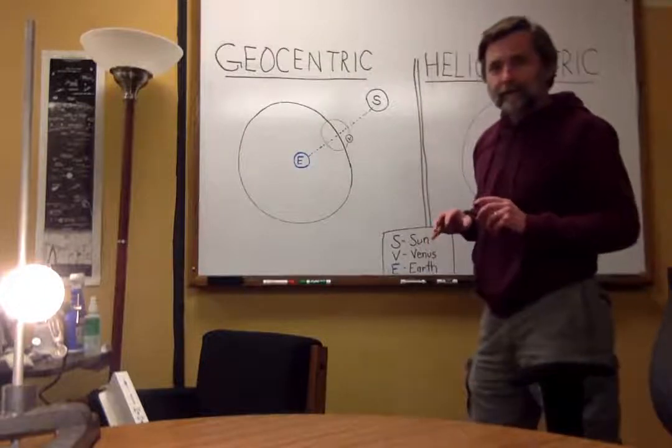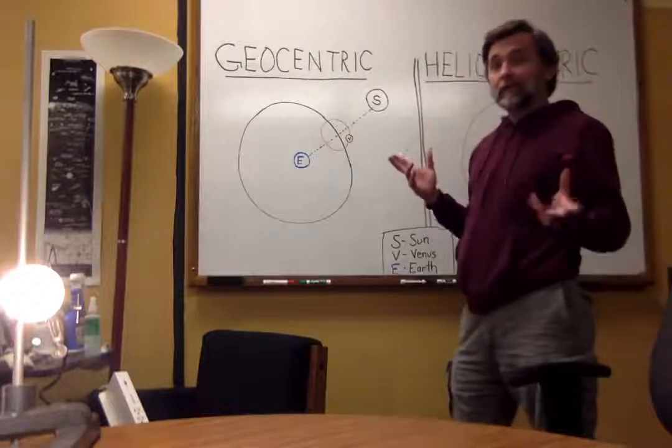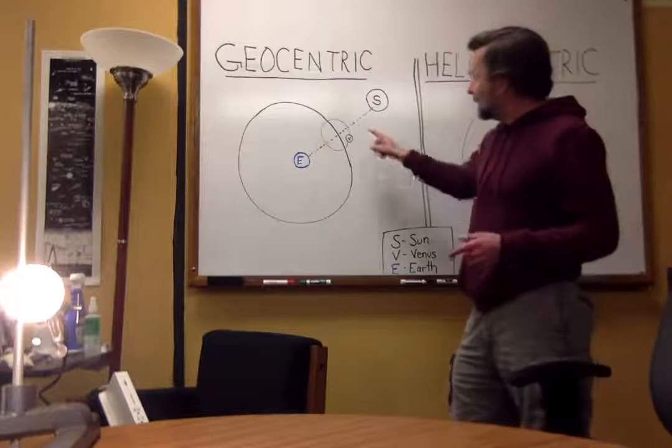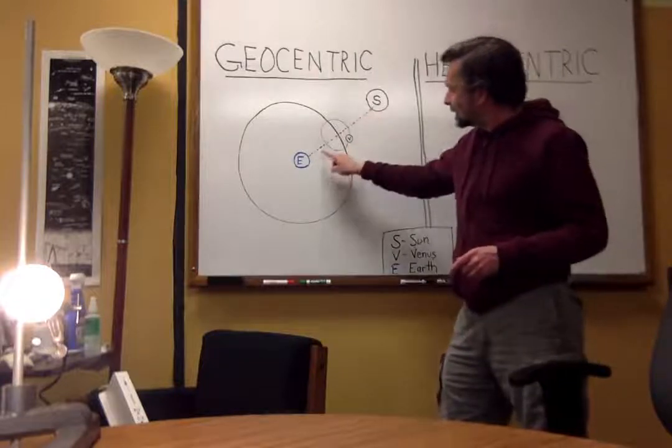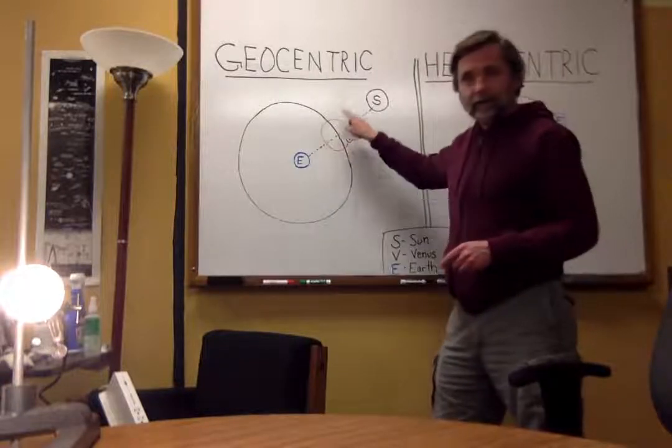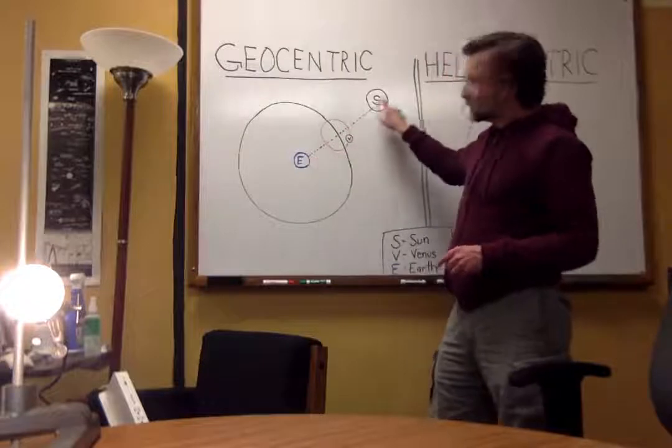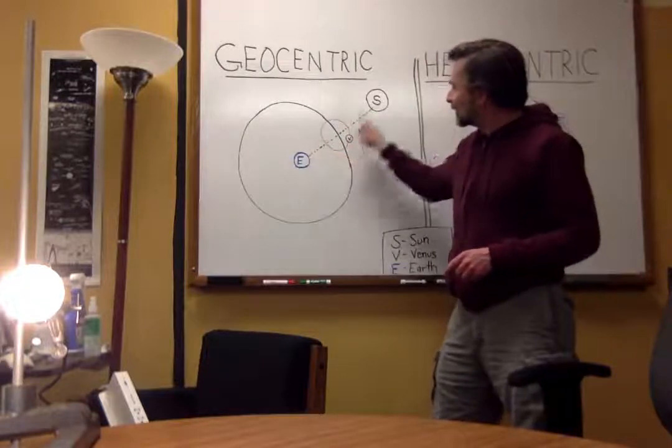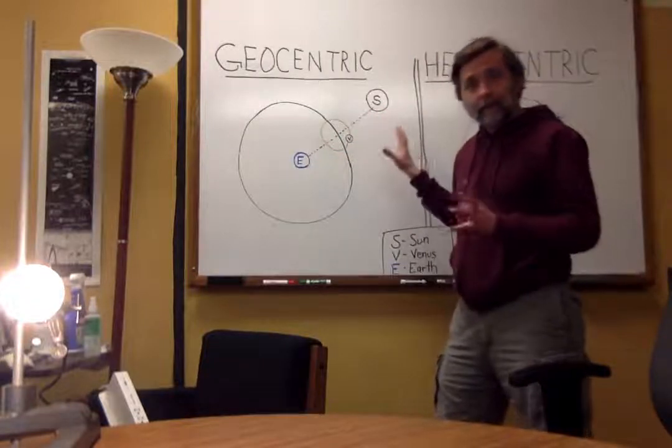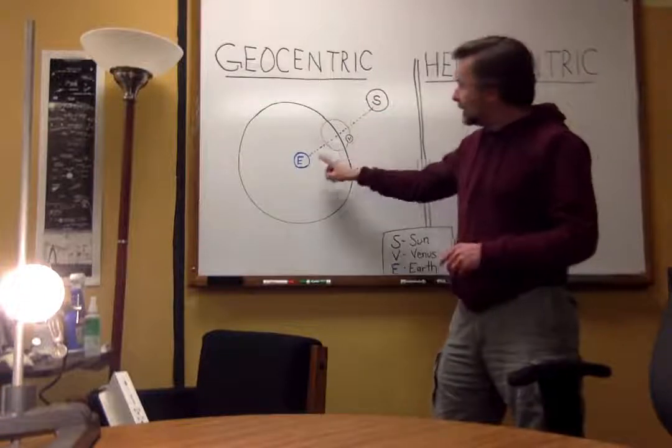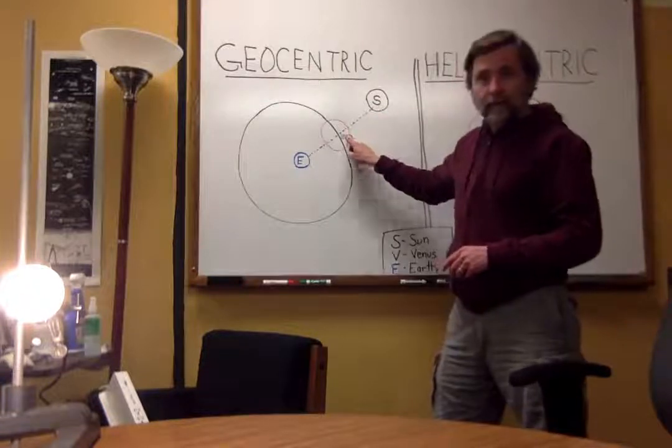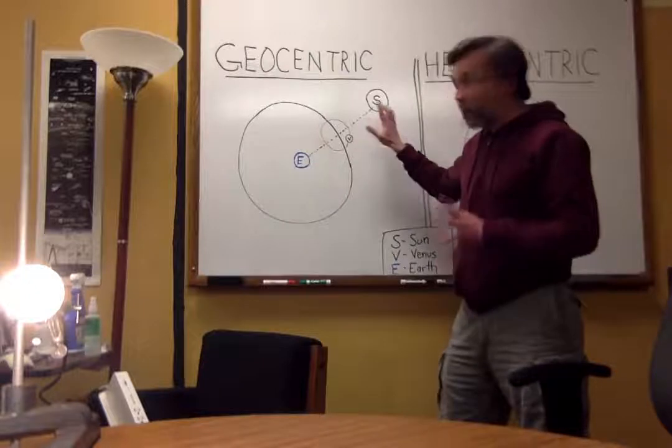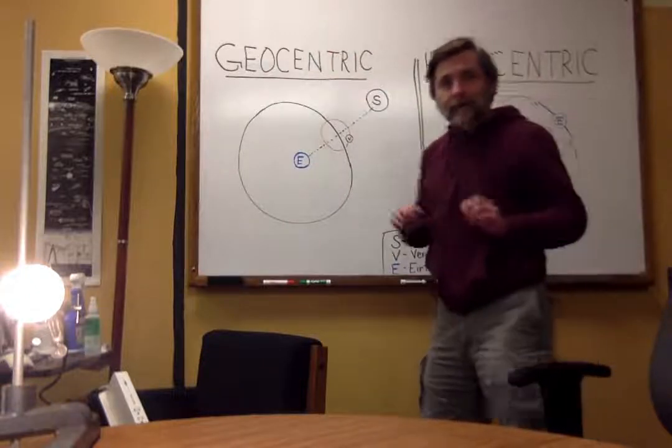Furthermore, to explain the fact that Venus could never be seen at midnight, they supposed that this epicycle of Venus was along some sort of dotted line that connected Earth to the Sun. And therefore, in this model, Venus should always be between the Earth and the Sun. Always, in the geocentric model.